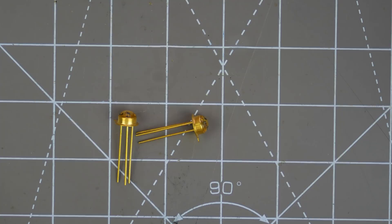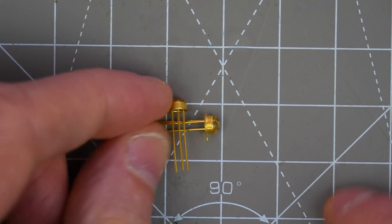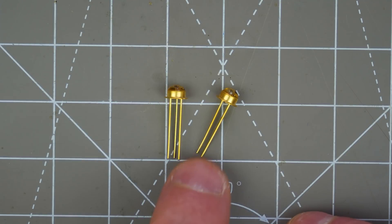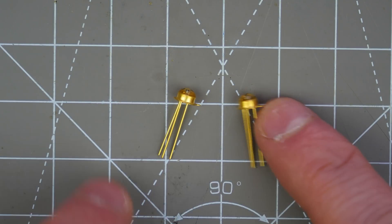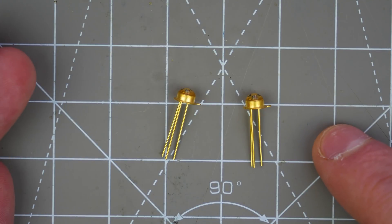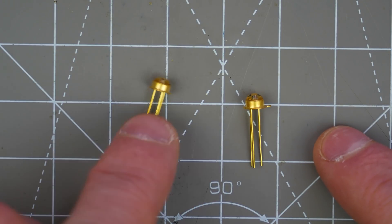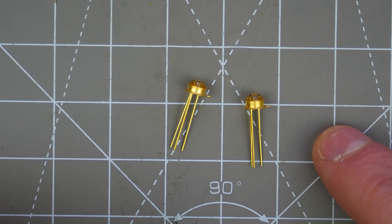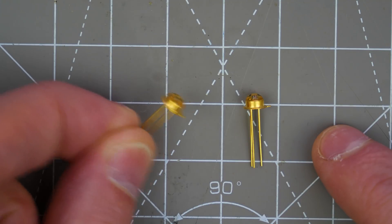They're in a TO package, so a transistor outline package. You can see it's got three leads, just like a transistor would. I don't know what these are. There's no marking on them, no part number, so I haven't been able to get a data sheet or anything. He tells me they're red LEDs.